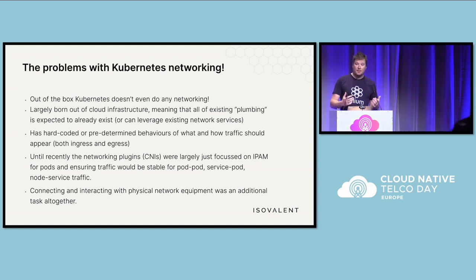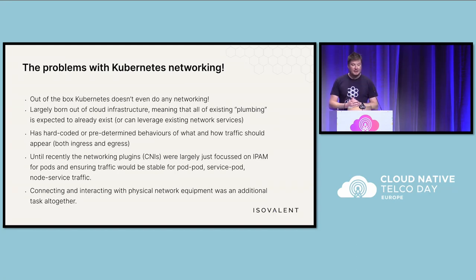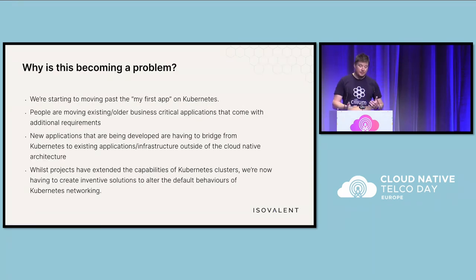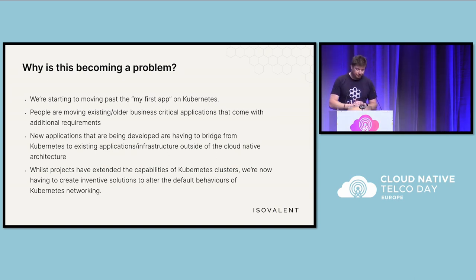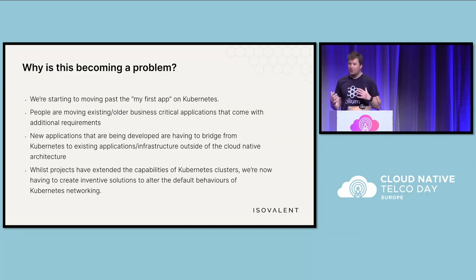Until recently, a lot of the networking plugins were largely just focused on internal traffic — everything within the cluster. That typically made connecting and interacting with existing network and physical infrastructure a bit of an additional task. This is actually becoming a problem because we're moving past your first simple application like a web server. People want to move existing applications that have different requirements — those critical applications — and they want to interact with existing and physical infrastructure. Whilst we've extended the capabilities of Kubernetes clusters, we're now having to create new and innovative solutions in order to alter those default behaviors.